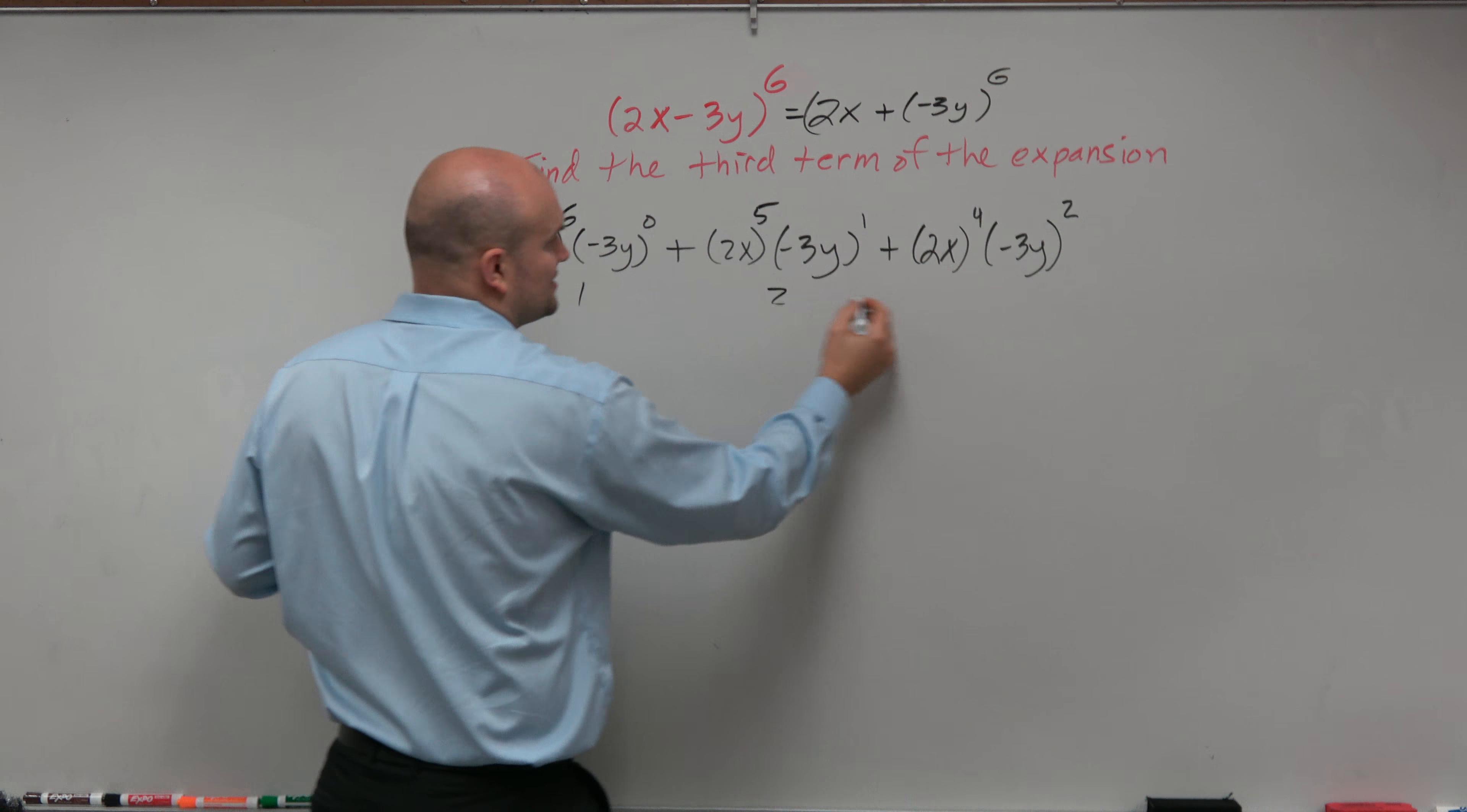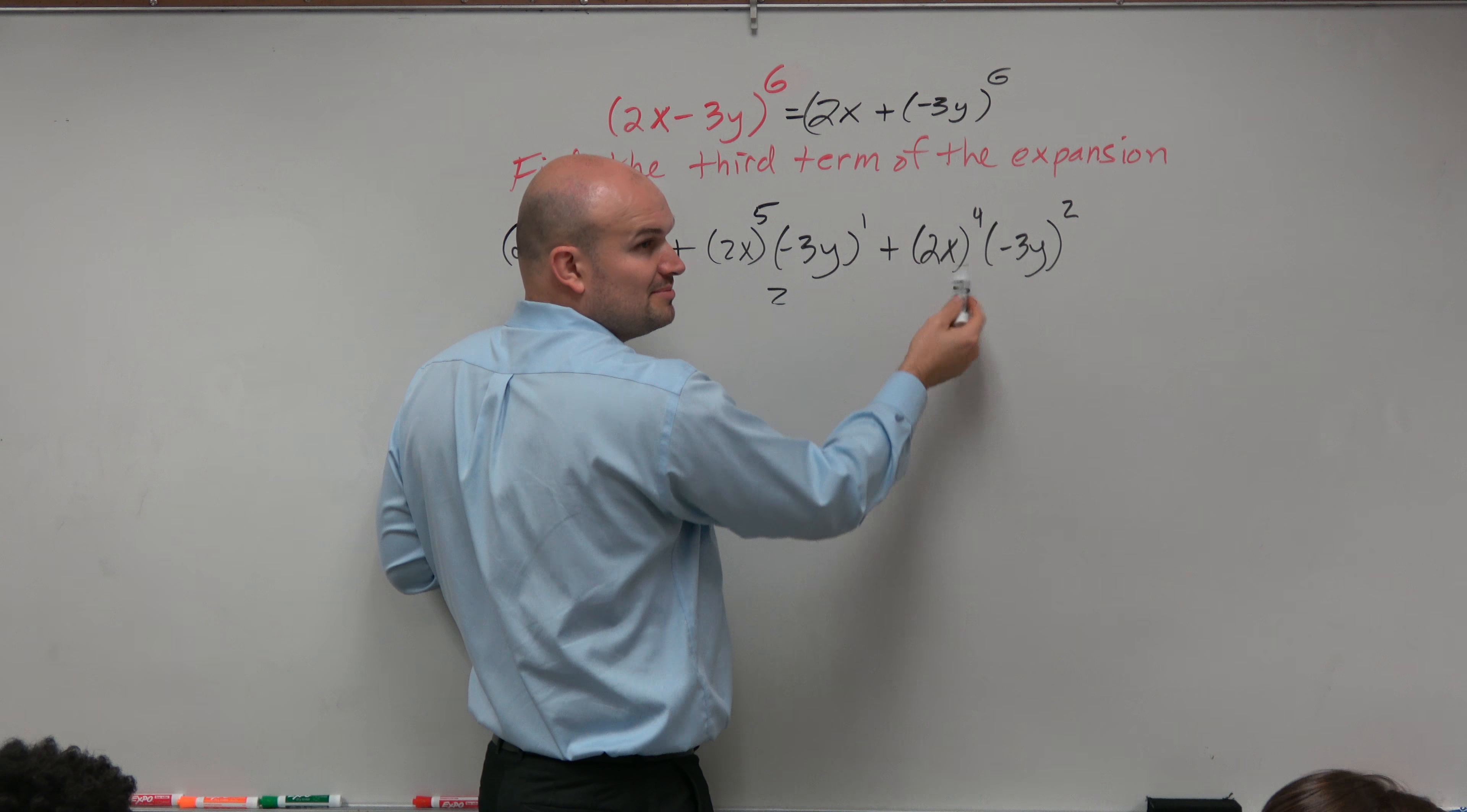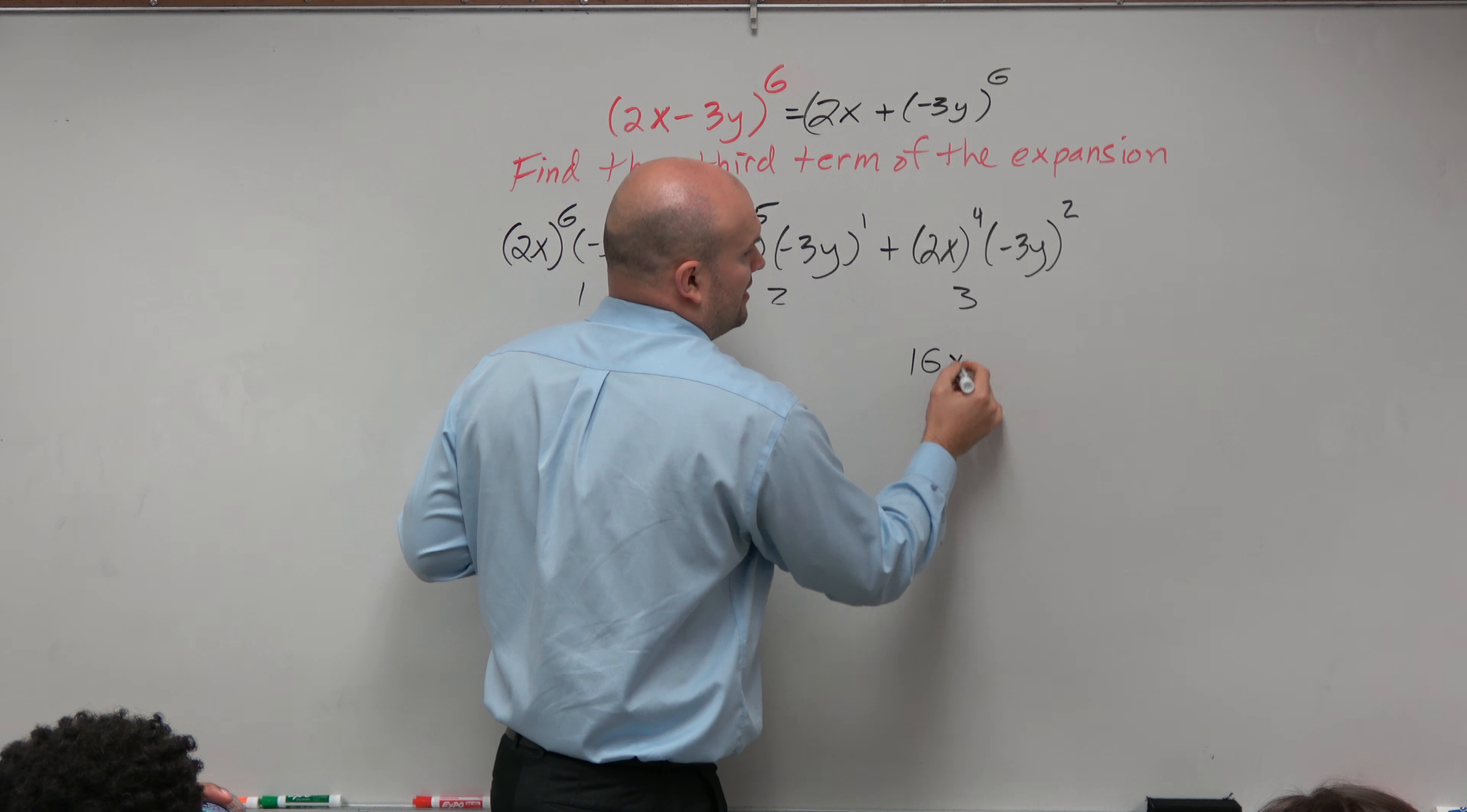So that's the first term, second term, third term. Well, that's what they're asking us to do. So now let's just simplify this. 2x to the fourth means 2x times 2x times 2x times 2x. So 2 to the fourth power is going to be 16x to the fourth.